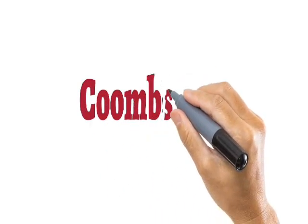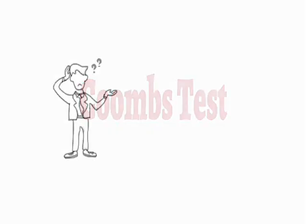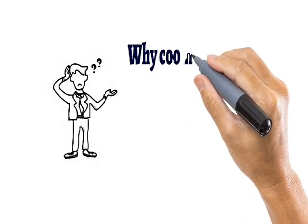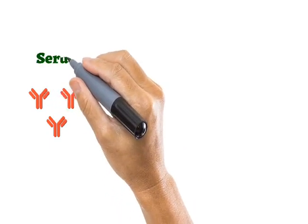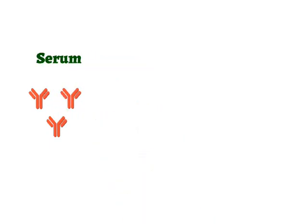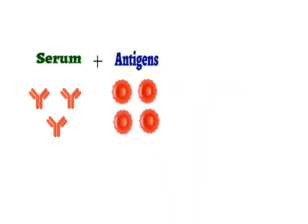Welcome back friends. In this session we will learn about one more immunological technique which is known as the Coombs test. Before discussing the actual Coombs test, we will first discuss why it was developed. Whenever we have to detect the presence of particular antibodies in a serum sample, we take out the serum sample from the affected person and mix it with the respective antigen in appropriate concentration.